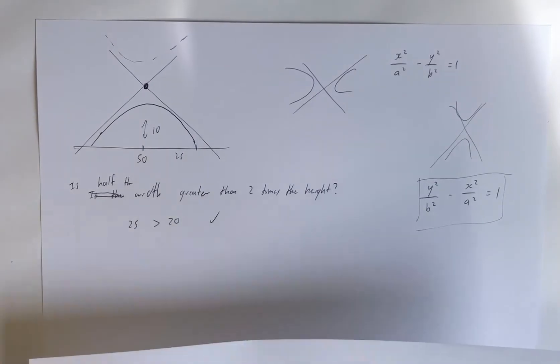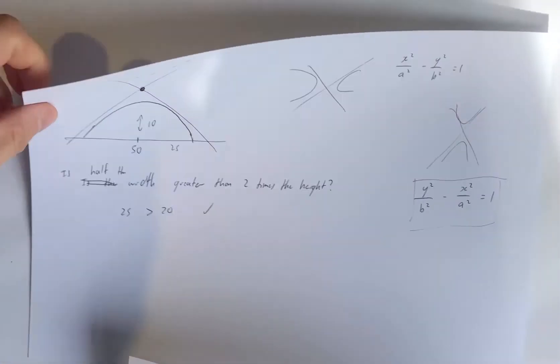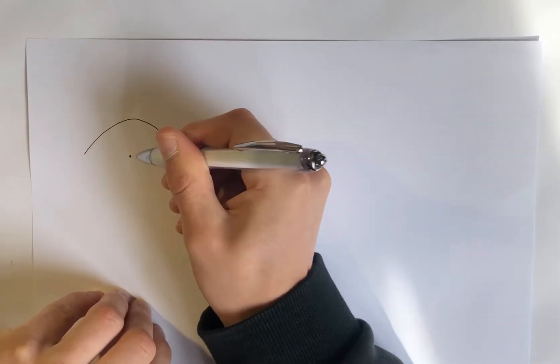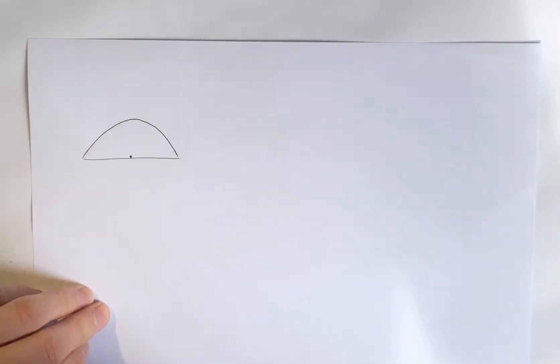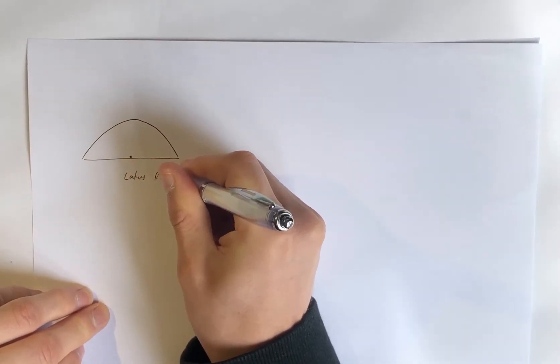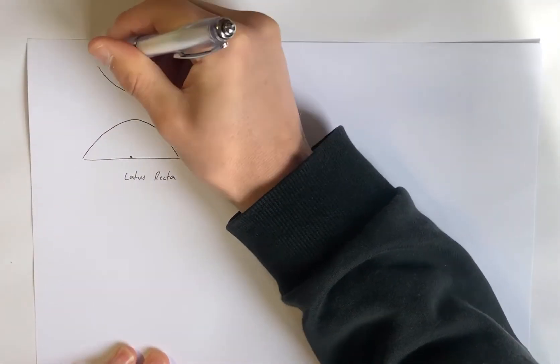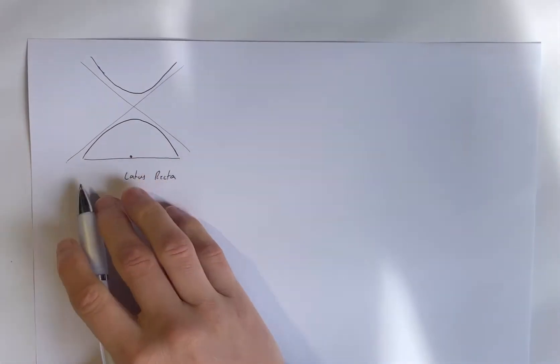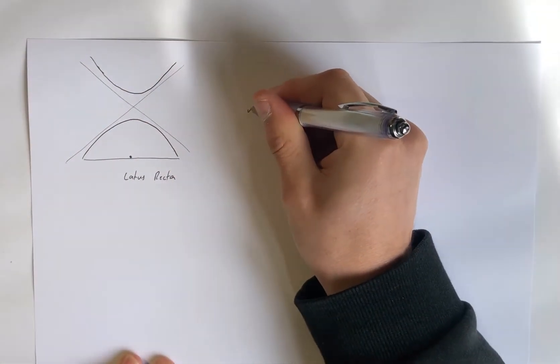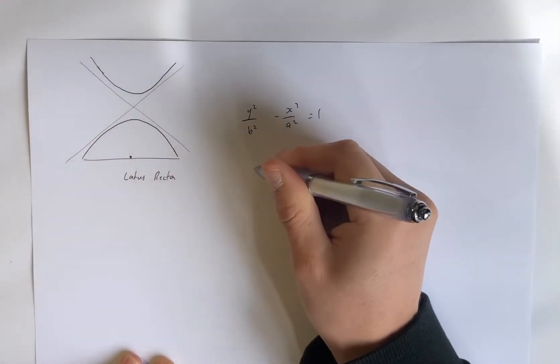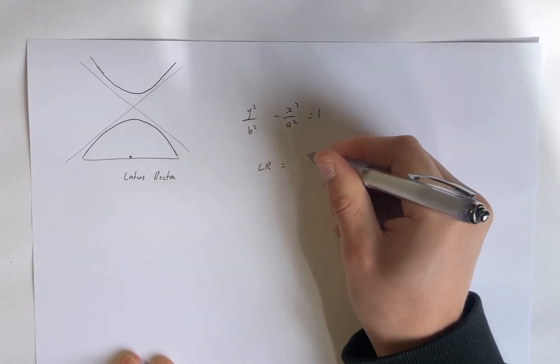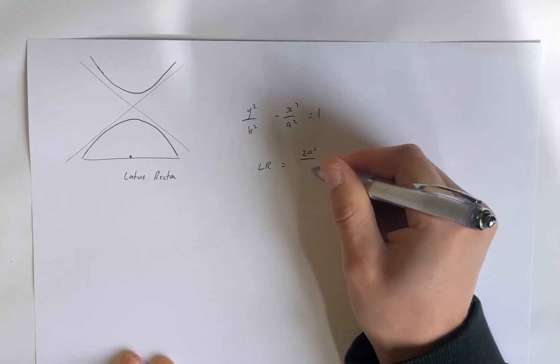So half the width is greater than 2 times the height, and I'll prove that at the end. It just means we can fit a hyperbola, and this is how we're going to do it. With one new piece of information. If we have a hyperbola and it has a focal point, then a hyperbola also has what is called a lattice rectum. A lattice rectum or a recta. I also use recta.